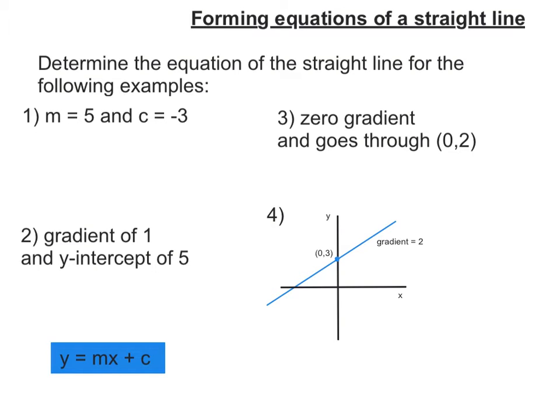In this video, we're going to form equations from these following examples. But before we do that, we've got to remember that the equation of a straight line is y equals mx plus c, where m is the gradient of the line, how steep it is, and c is its y-intercept, where it crosses the y-axis.